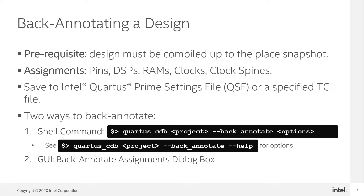There is one prerequisite to backannotate your design: it must be compiled up to the placed snapshot in order to have placement assignments that can be preserved. The supported resources you can backannotate are PINS, DSP, RAM, CLOCK, and CLOCK-SPINE assignments. These assignments can be saved directly to the QSF or a specified TCL file which can later be sourced. All of this can be done either through the Quartus CDB shell command or through the Quartus graphical user interface.